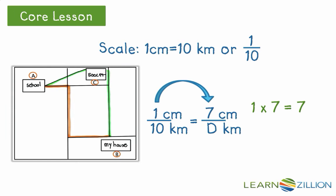First, we set up this proportion with the actual distance represented by D. We see the multiplicative relationship of 1 times 7 equals 7. So we know that 10 is multiplied times 7 to get the actual distance of 70 kilometers. We know this because every 1 centimeter equals 7 kilometers. So 10 centimeters would equal 70 kilometers, the actual distance.